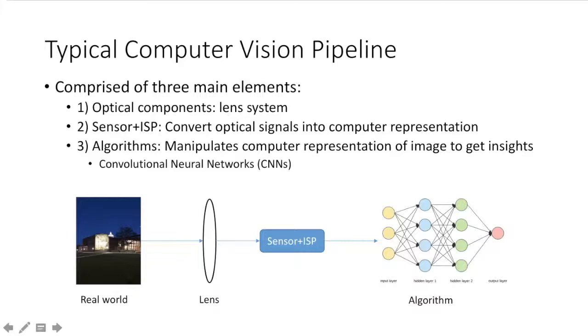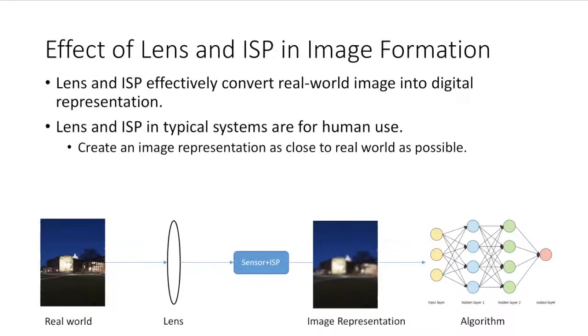Consider the traditional computer vision pipeline in an embedded vision system. Such a system will be comprised of three main elements. The first being the optical components or lens system, which takes in the actual light from the real world and sends it to the sensor or ISP, which converts the optical signals into a computer representation. Finally, we have algorithms on the back end which manipulate the computer representation of the image to get insights.